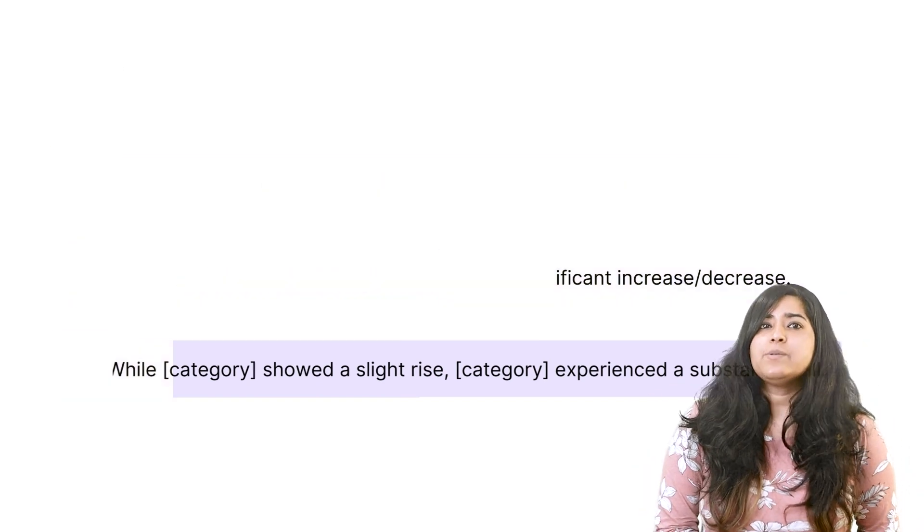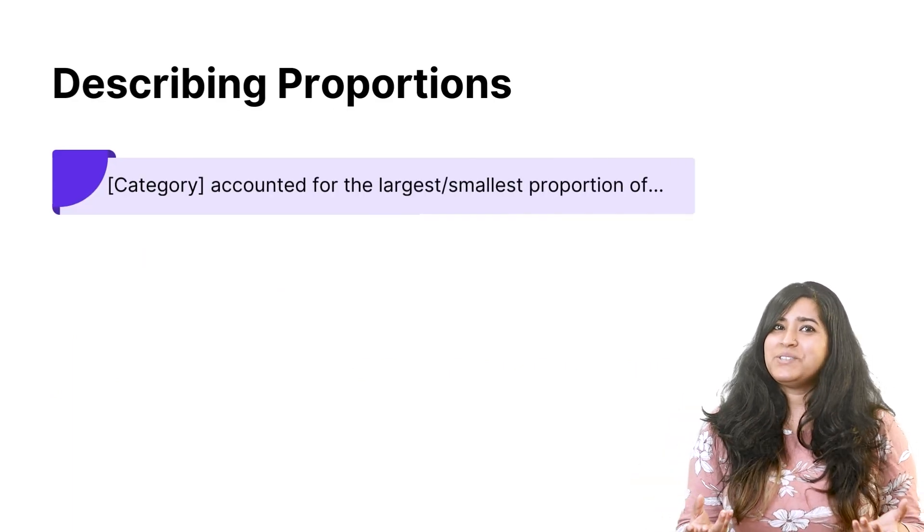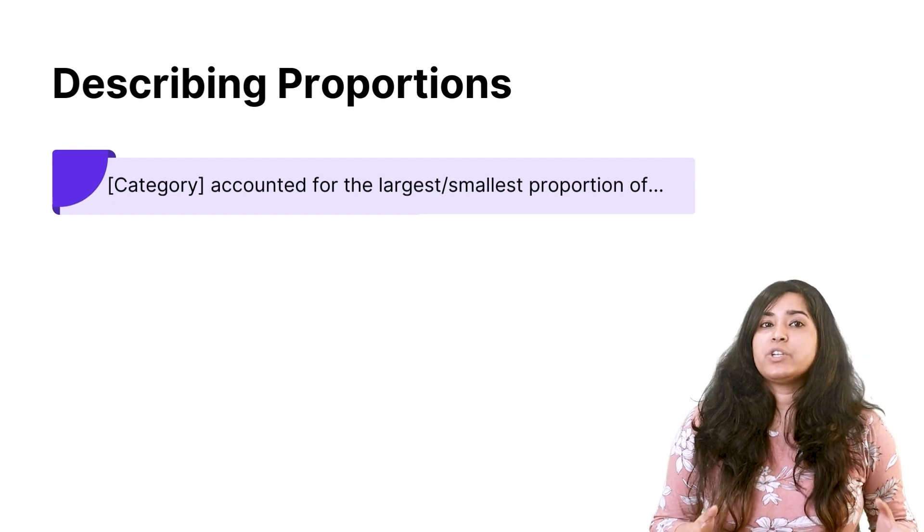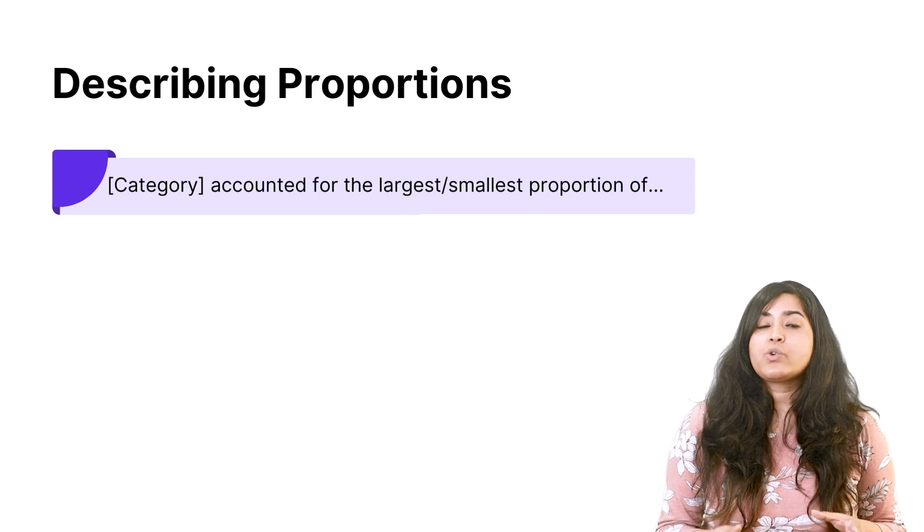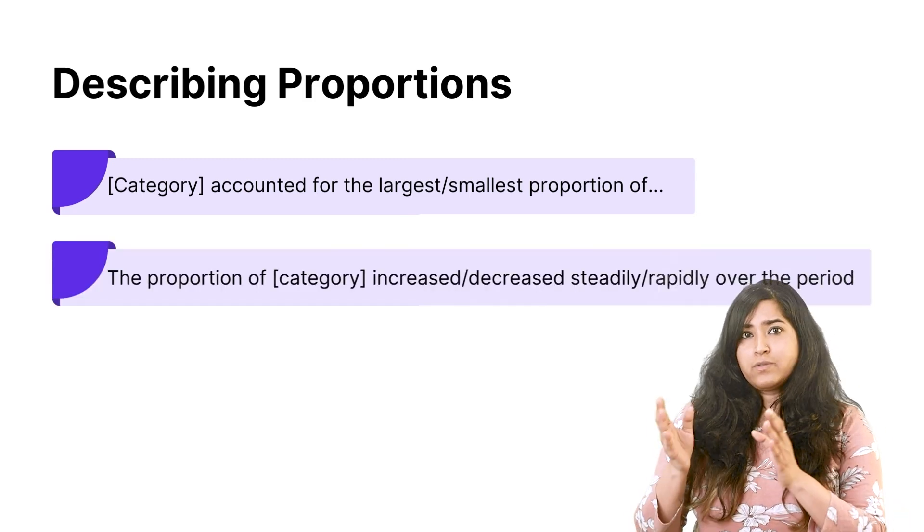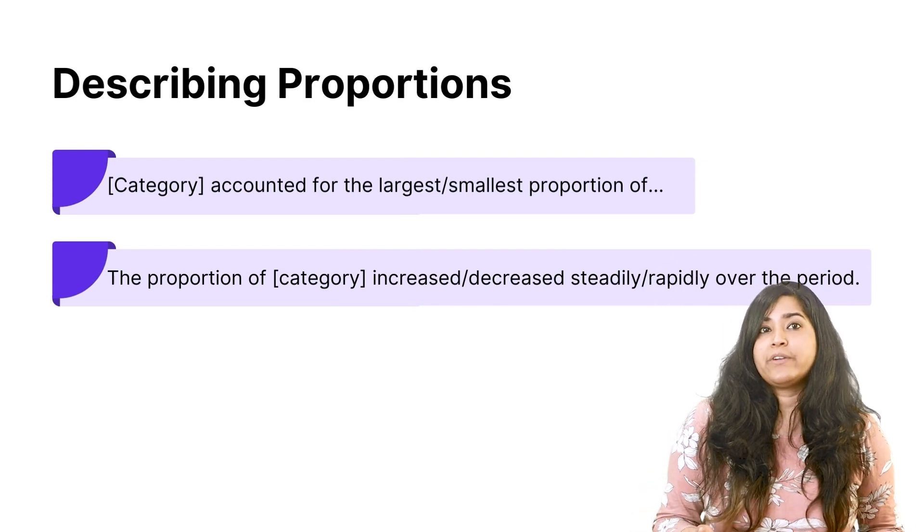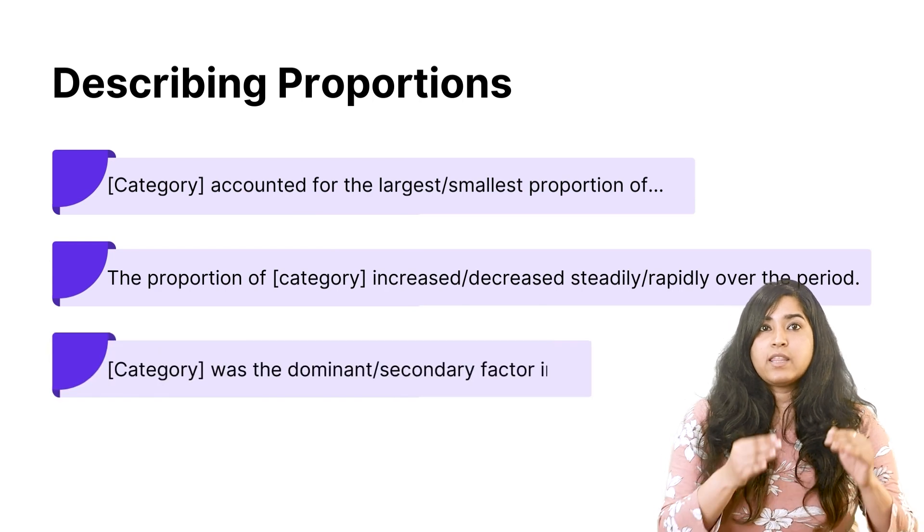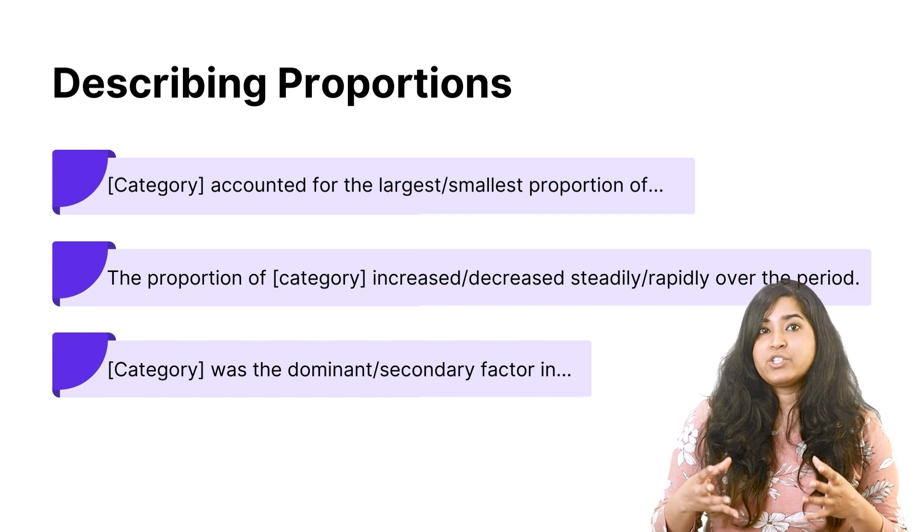There will be times where you might have to or want to describe proportions and from that you can use these to do so. When you're describing a certain category, you can say, the category accounted for the largest or the smallest proportion of. Or, the proportion of said category increased or decreased steadily or rapidly over the period. Or, you can also say the specific category was dominant or secondary factor in.